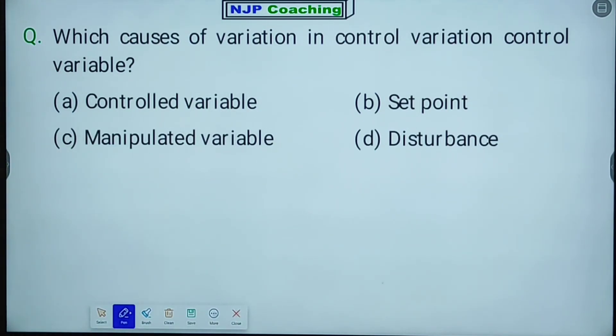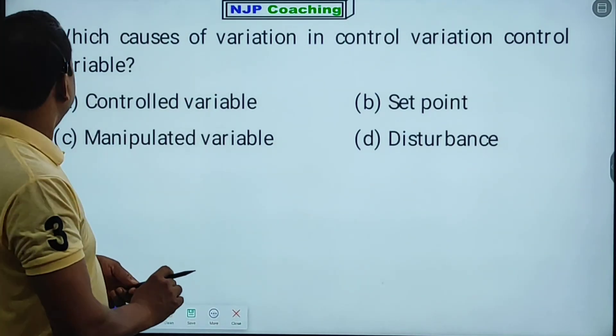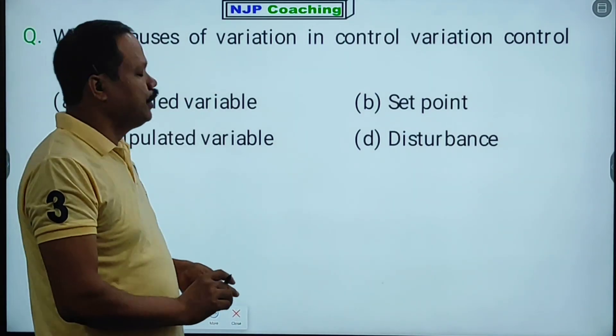Which causes variation in control variation and control variable?